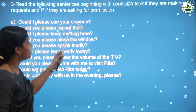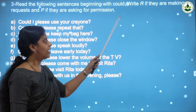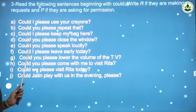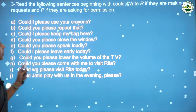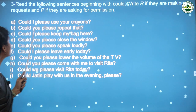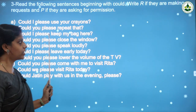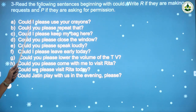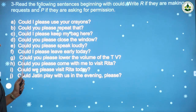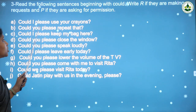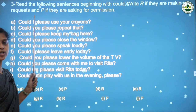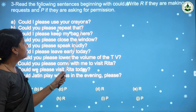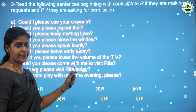Next activity: read the following sentences beginning with 'could.' Write R if they are making a request and P if they are asking for permission. First: 'Could I please use your crayons?' Here the boy or girl is seeking permission to use the crayons, so you should write P for permission.